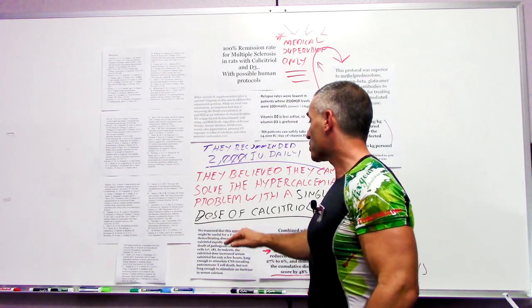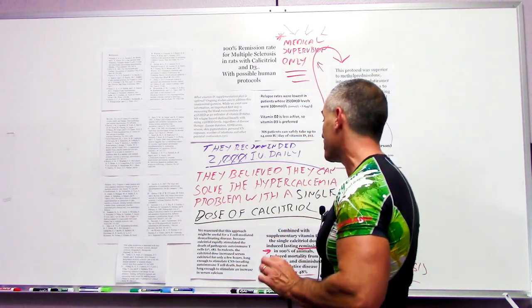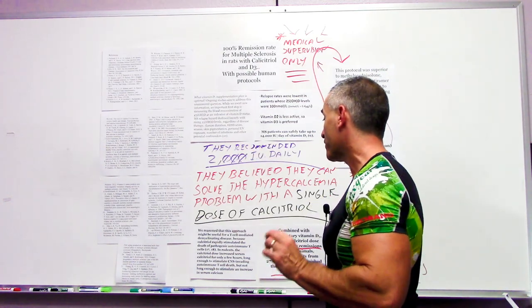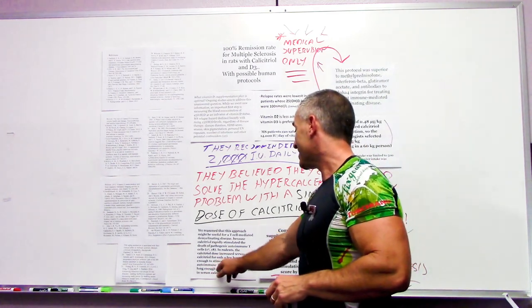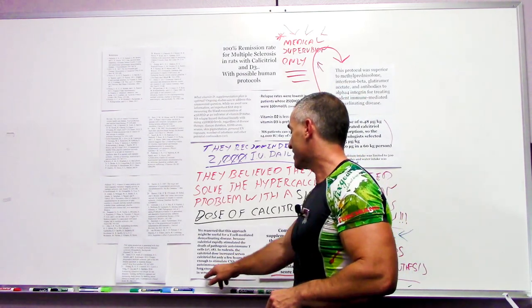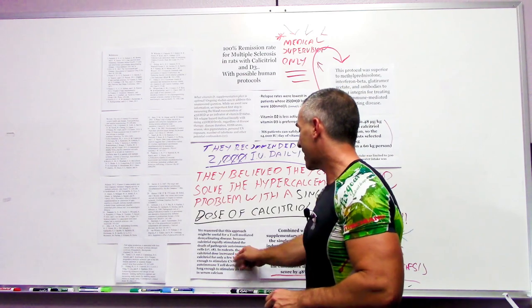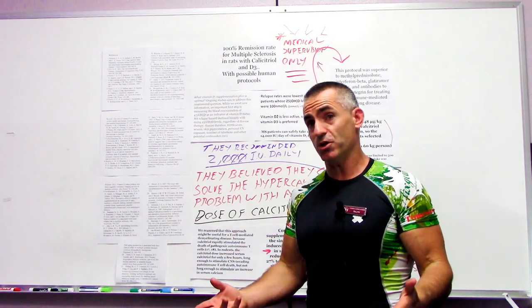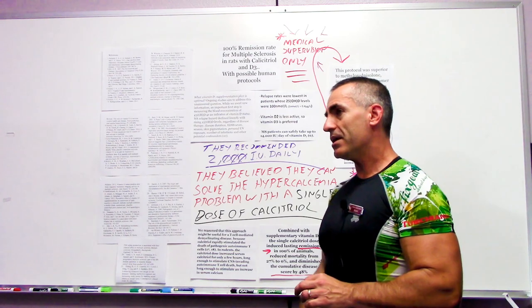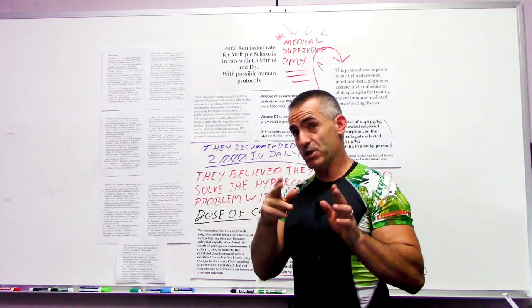They believed they could solve the problem of hypercalcemia with a single dose of calcitriol or pulse. They reasoned this approach might be useful for T-cell mediated demyelinating disease because calcitriol rapidly stimulated the death of pathogenic autoimmune T-cells. In rodents, the calcitriol dose increased serum calcitriol for only a few hours, long enough to stimulate CNS invading autoimmune T-cell death, but not long enough to stimulate an increase in serum calcium. So what if they just got things going and then followed up with oral D3?